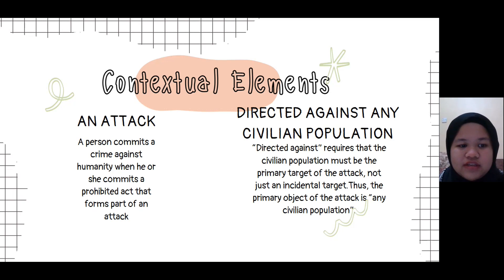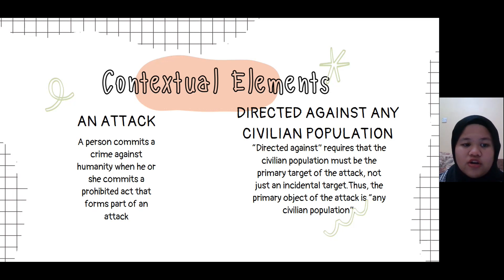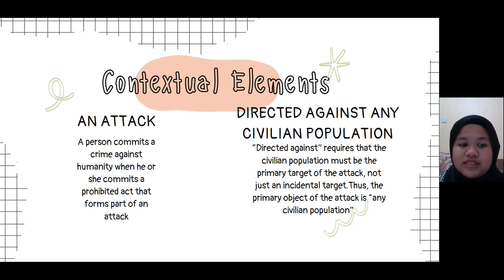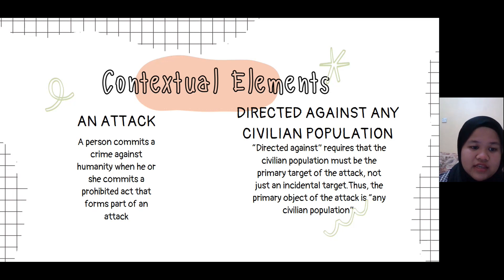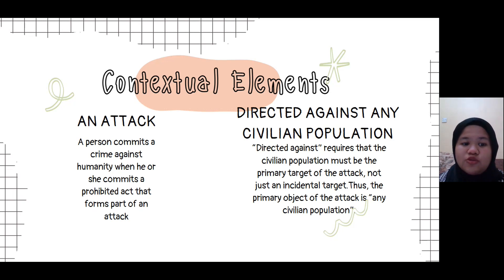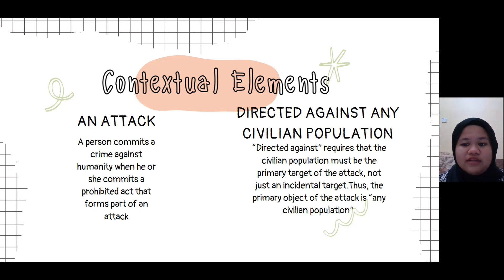In addition, based on Article 7, clause 2(a) of the Rome Statute, crimes against humanity must be committed in furtherance of a state or organisational policy to commit an attack. The plan or policy does not need to be explicitly stipulated or formally adopted and can therefore be inferred from the totality of the circumstances. In contrast with genocide, crimes against humanity do not need to target a specific group. Instead, the victim of the attack can be any civilian population regardless of its affiliation or identity.